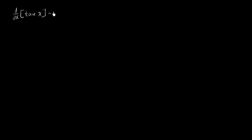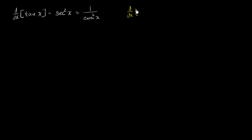We already know that the derivative with respect to x of tangent of x is equal to secant of x squared, which is of course the same thing as 1 over cosine of x squared. Now what we want to do in this video, like we've done in the last few videos, is figure out what the derivative of the inverse function of the tangent of x is — specifically, the derivative with respect to x of the inverse tangent of x.